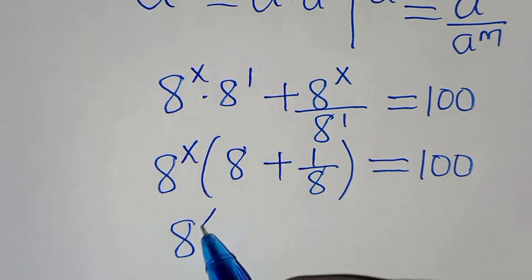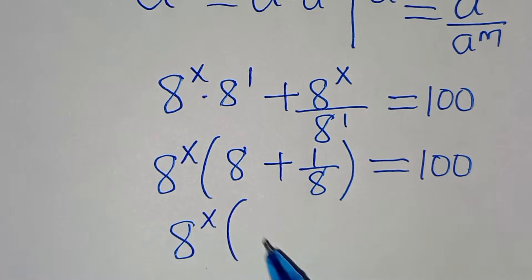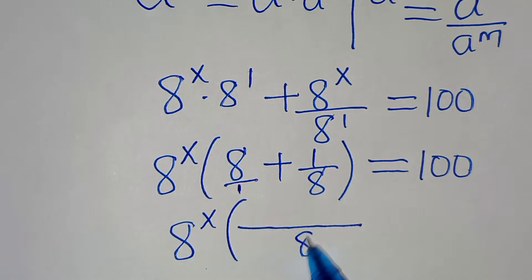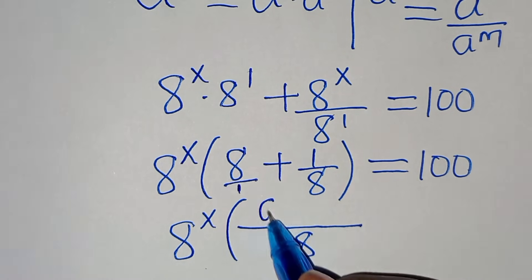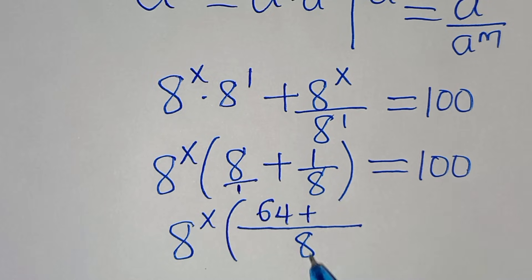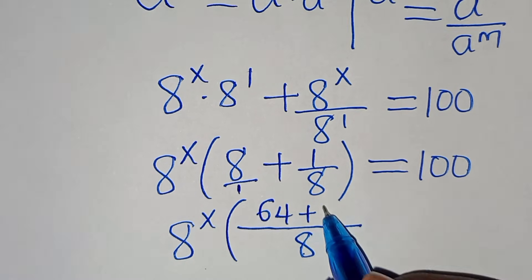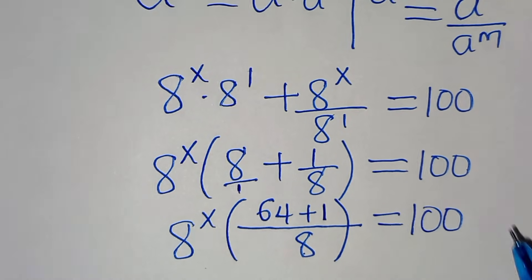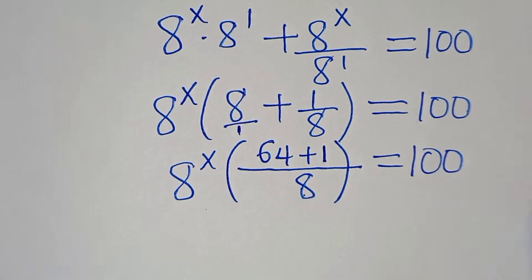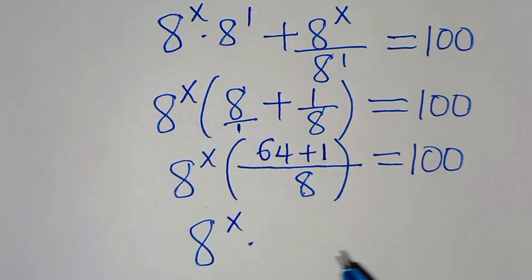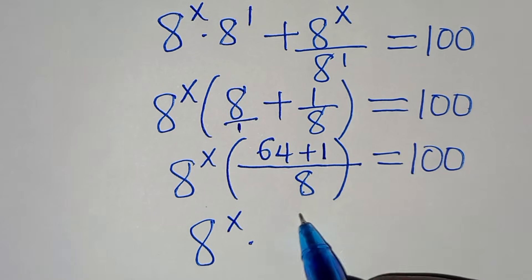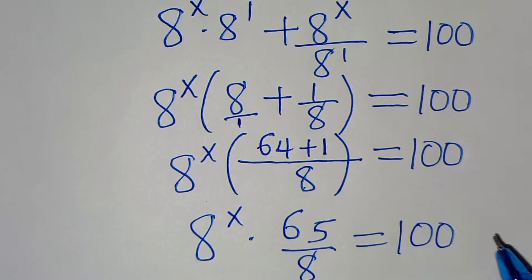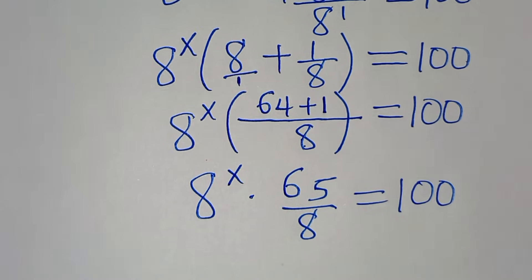Next, we find the LCM inside the parentheses. Writing 8 over 1, the LCM is 8: 8 times 8 is 64, plus 1, giving 65. So we have 8^x multiplied by 65/8 equals 100.